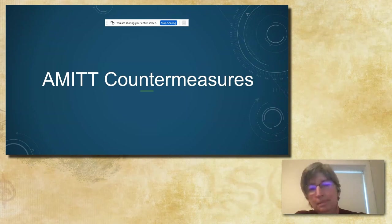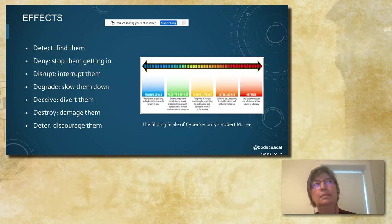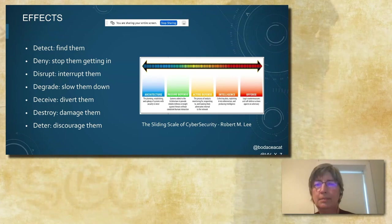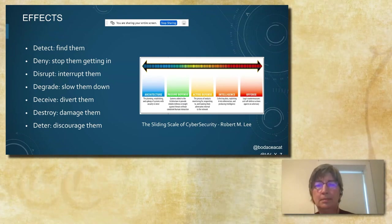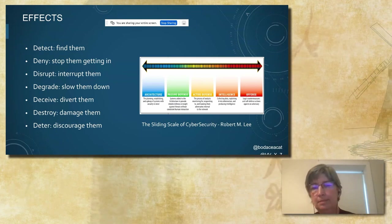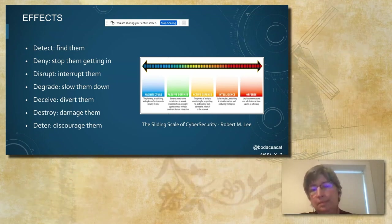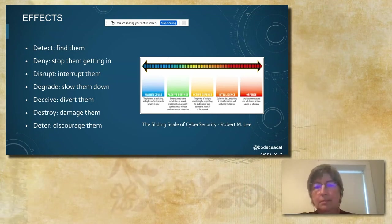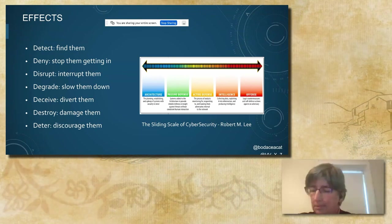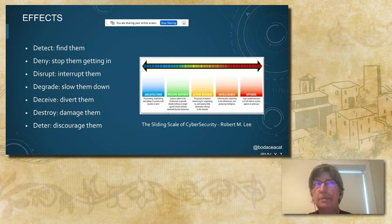The other thing we need to talk about are countermeasures and the AMET countermeasure framework. This slide shows effects summarized from JP 3-13, which is the Joint Chiefs Information Operations Manual by the US government. When we talk about the effects of a countermeasure, we mean the effect it has on a target. Each of our mitigations and countermeasures will produce at least one of the effects shown here. The effects range from denial — completely stopping or denying an adversary capability — to deception, which diverts or deceives an adversary into a less desirable state, to deterrence, which discourages them from taking an action at all.